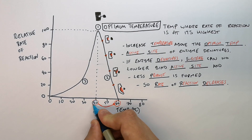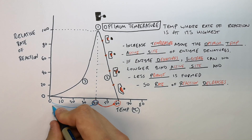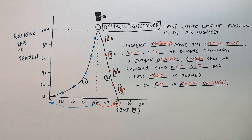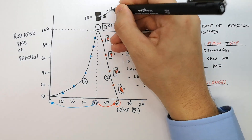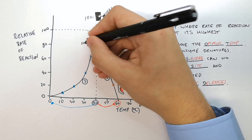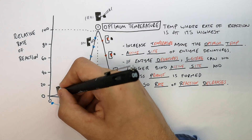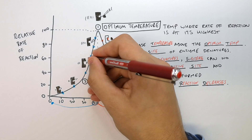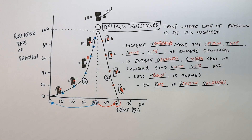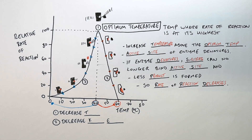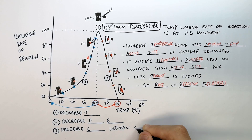What happens if you decrease the temperature below the optimum temperature? The rate of reaction will also decrease. The active site does not change shape. However, the kinetic energy within the reaction of the enzyme and the substrate does change — that is shown by the speed lines on the enzyme. As you decrease the temperature, there is a decrease in kinetic energy, so the particles — the enzymes and the substrates — are literally moving slower. Therefore you decrease the collisions between the substrate and the enzymes.